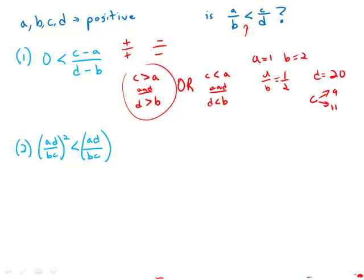And 9 over 20 would be less than a half. 11 over 20 would be greater than a half. And so we can make choices that make the inequality go either way.